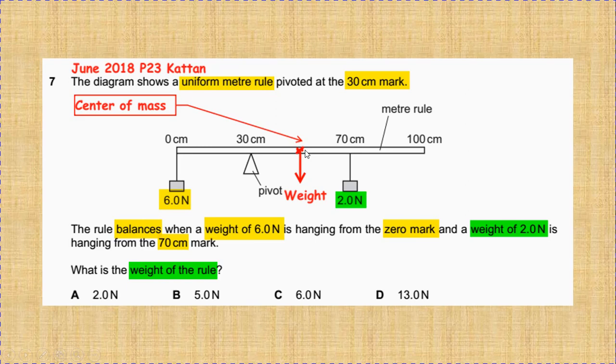The center of mass is the point at which the whole mass of the meter rule is acted on - the middle or the halfway point. The weight is acting at the 50 centimeter mark, the halfway point.